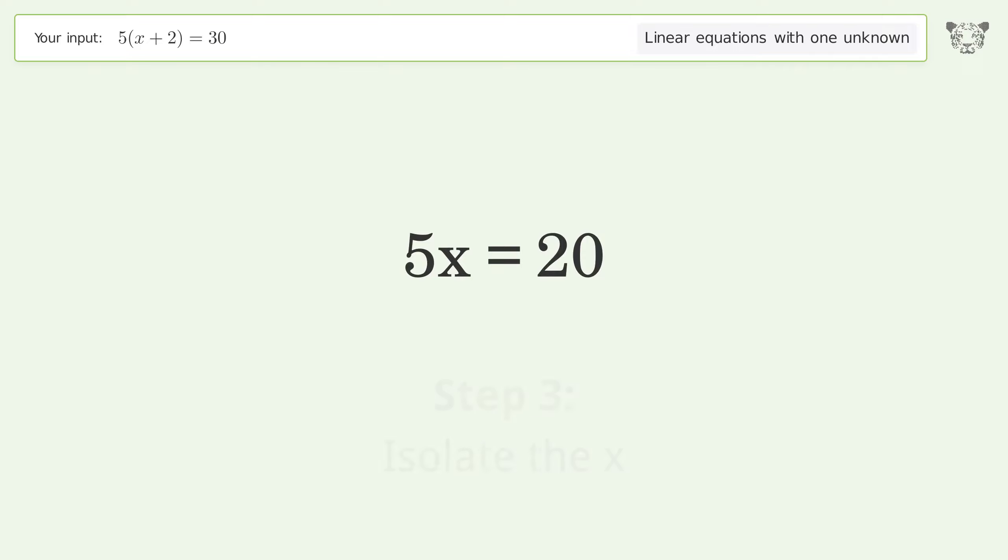Isolate the x. Divide both sides by 5. Simplify the fraction.